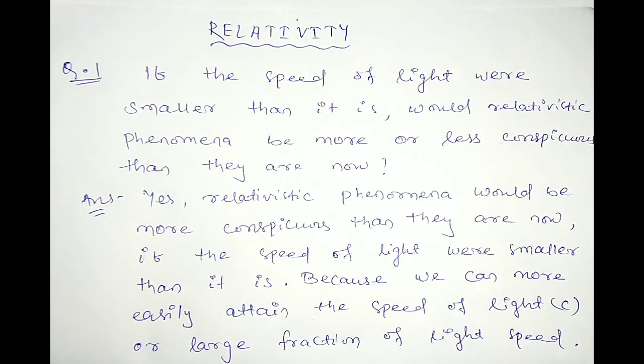In further explanation, relativistic phenomena depend on the ratio v/c. Here v is the relative speed of the frame of reference and c is the speed of light. If the speed of light were smaller than it is, the relativistic phenomena would be more conspicuous than they are now.